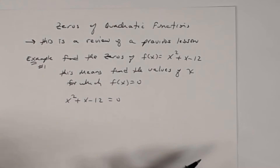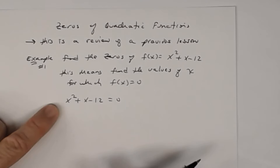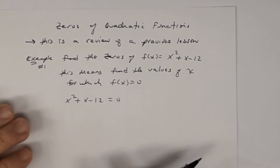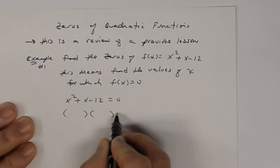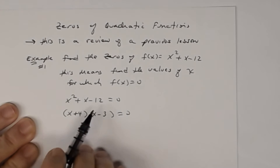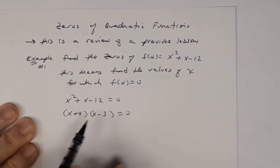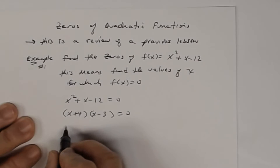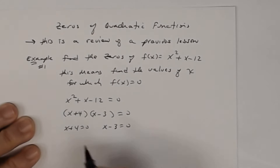All of our examples in here will be factorable. You could also use the quadratic formula, but I want to use factoring here because at some point we're going to remind ourselves about the factor theorem. So if I factor this, I get x plus four times x minus three. Using the zero factor theorem, we set each factor equal to zero: x plus four equals zero, x minus three equals zero, and we solve for x. So x would be negative four, and x would be three.